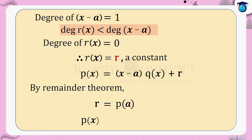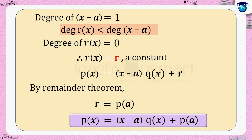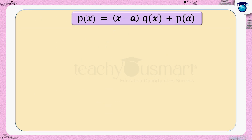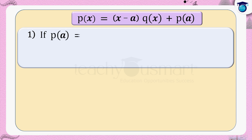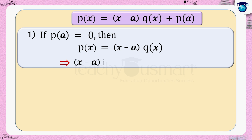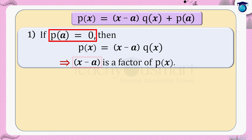Therefore p(x) = (x − a) × q(x) + p(a). If p(a) = 0, then p(x) = (x − a) × q(x), which shows that (x − a) is a factor of p(x). That is, if p(a) = 0 then (x − a) is a factor of p(x).